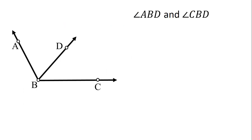For example this figure. So we have angle ABD and angle CBD as Adjacent Angles. So itong dalawang to ay Adjacent Angles. Then ano yung common vertex nila? Ang common vertex nila is yung point B. How about yung common side? Ang common side nila is RayBD.